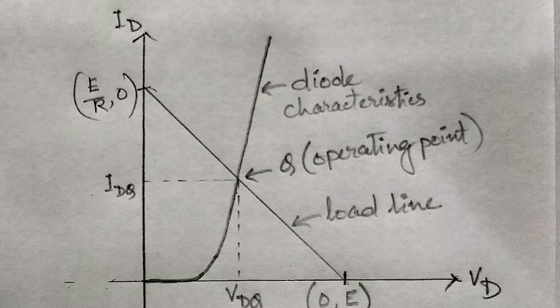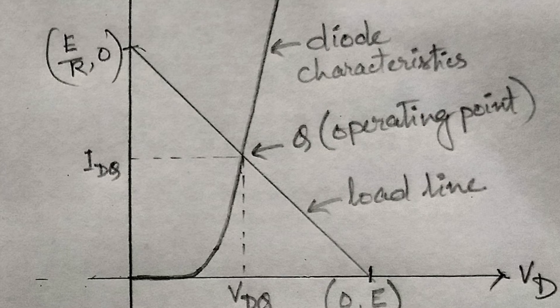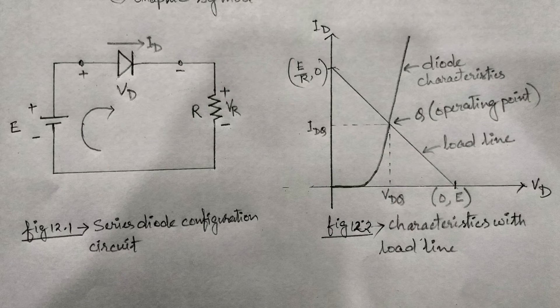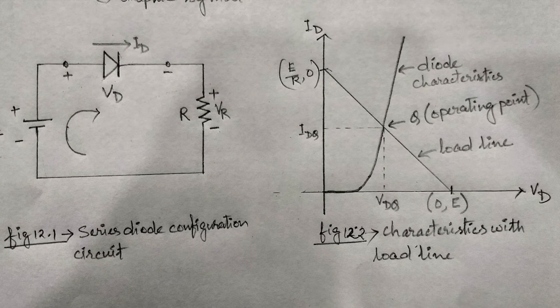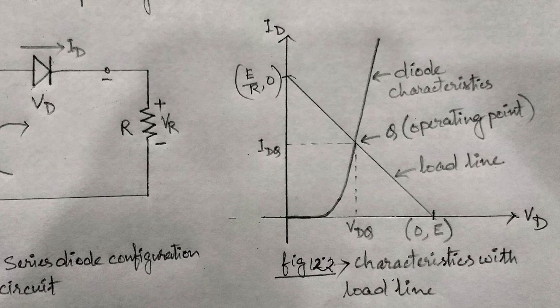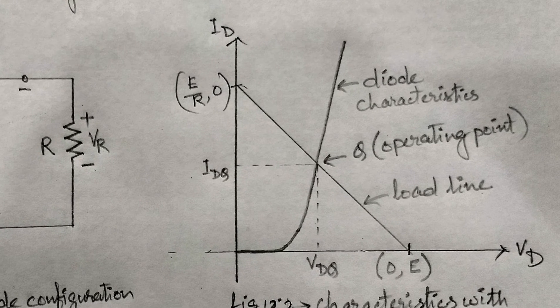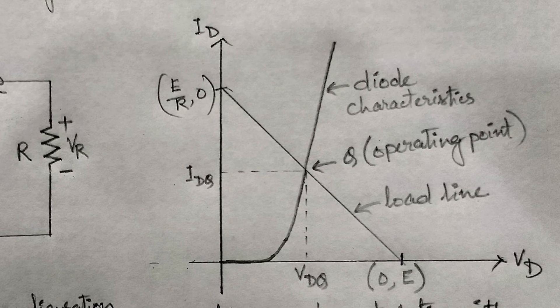The line joining the two intersection points is called the load line. Point to be noted that by changing the value of load resistance R, we can change the vertical axis intersection point, so that the slope of the straight line depends on the value of R.